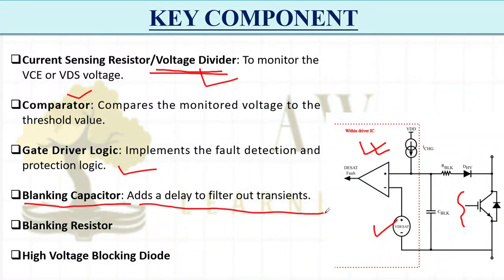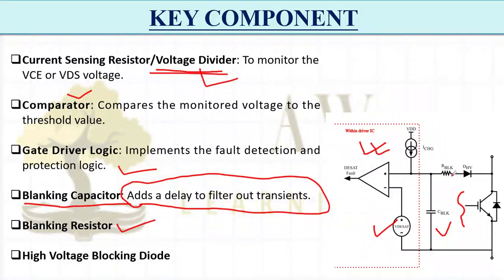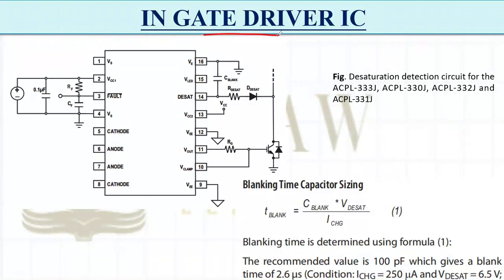An important component is the blanking capacitor, which adds a delay to filter out transients — this will be explained in detail shortly. There is also a blanking resistor and a high-voltage blocking diode. Now, looking at an example gate driver IC for IGBT protection, pin 14 provides inherent DSAT protection. You only need to add the blanking capacitor C_blk, R_dsat, and D_dsat externally to complete the circuit.